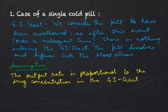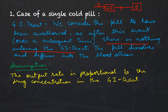In this case we consider that the pill has already been swallowed in the GI tract, so after this there is nothing going into the GI tract. The pill dissolves and diffuses into the bloodstream from the GI tract. In the compartment diagram, we have GI tract and bloodstream. Because the pill has already been swallowed, there is zero input — nothing is entering the GI tract — and there is only one output term. We assume that the output rate is proportional to the drug concentration in the GI tract.